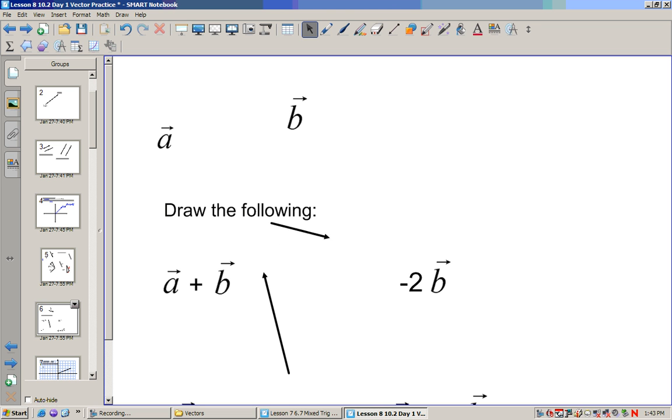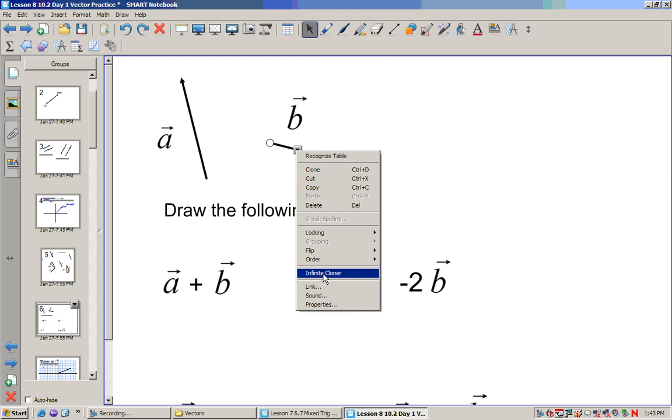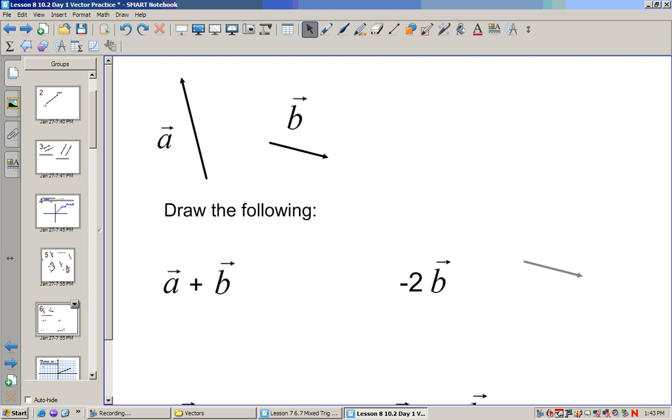A plus b. We take a. We take b. A plus b is the vector starting at the beginning of the a, going to the end of b. So that's this vector there. Oh, these ones aren't infinitely cloned. Oops. Let's do this just so I can keep these things going. So negative 2b. If I had 2b it would look like this. So negative 2b starts here. It goes in the opposite direction. So this is negative 2b.